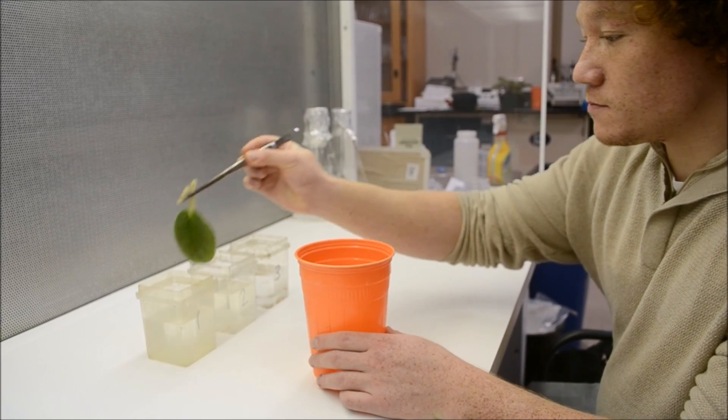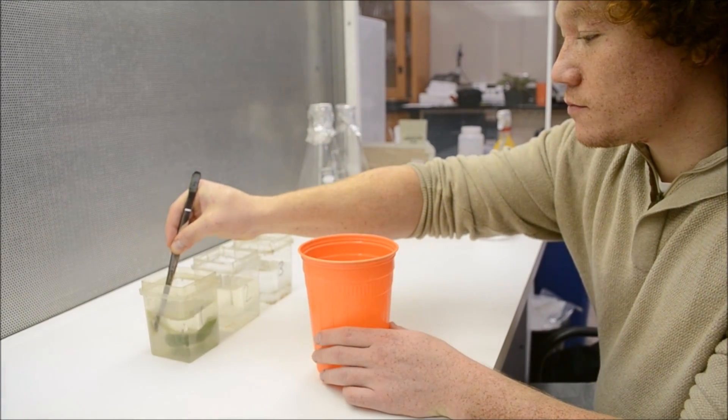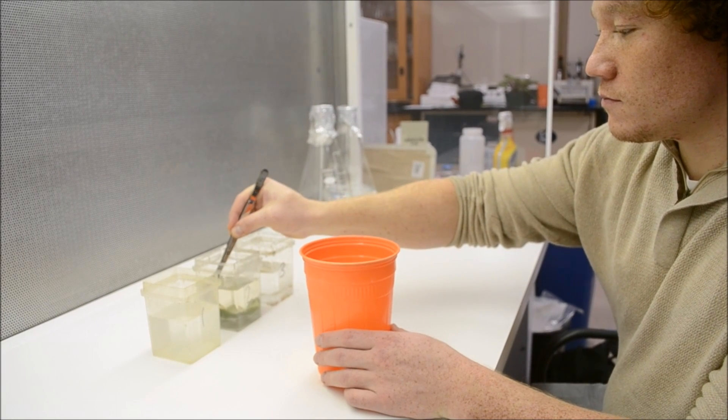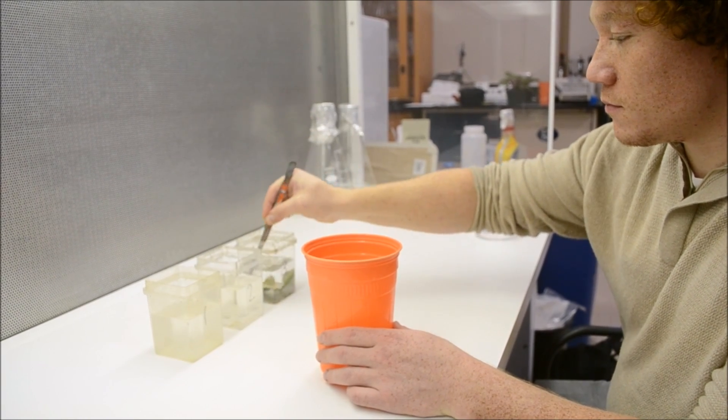Once you've transported your explants to the laminar hood desk, perform a 1-2-3 water rinse on your leaf and petiole. This will remove any leftover bleach from the disinfestation stage.